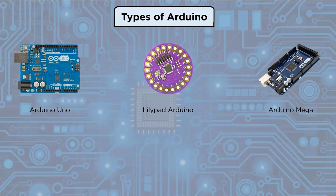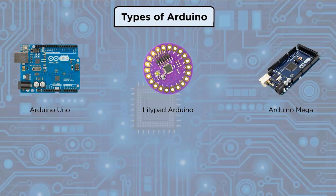Arduino Mega is the larger brother of Arduino Uno. It contains 54 digital I/O pins, 16 analog inputs, a USB connection, a power jack, and a reset button. It comes with everything you need to get started — plug it into a computer with a USB cable or power it with an AC-to-DC adapter or battery.